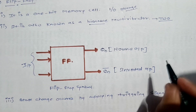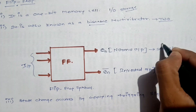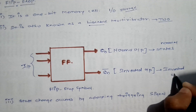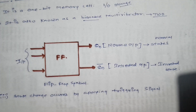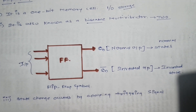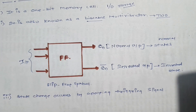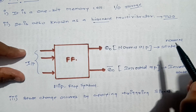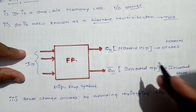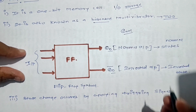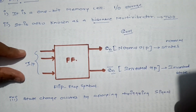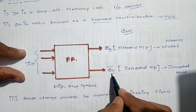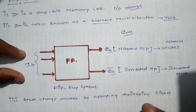These output terms are called states — QN is called the normal state and QN bar is the inverted state. As a flip-flop is a sequential circuit, its output depends on the present input and the past output. The present input becomes the past output, and the flip-flop output QN+1 is called the next state. This output depends on either QN, QN bar, or the input — that is why it is called a sequential circuit.